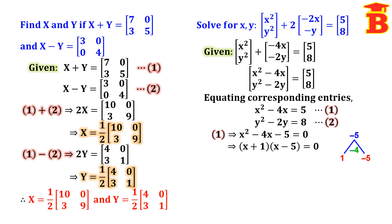From the factored form, setting each bracket equal to zero: from (x + 1) = 0, x equals minus 1; and from (x − 5) = 0, x equals plus 5. Just change the sign of each bracket term to get the values immediately. So x is equal to minus 1 and x is equal to plus 5.